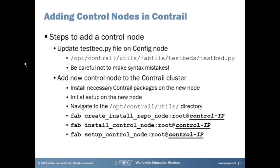In this example we'll start with one control node and add a second. The first thing you have to do is update the testbed.py file on the config node itself, found under the opt/contrail/utils/fabfile/testbeds/ directory. Be very careful not to make syntax mistakes — it's very finicky. If you do make a syntax mistake and run a fab command, it will tell you exactly where the problem is, specifying the line number, so it's manageable but time-consuming.